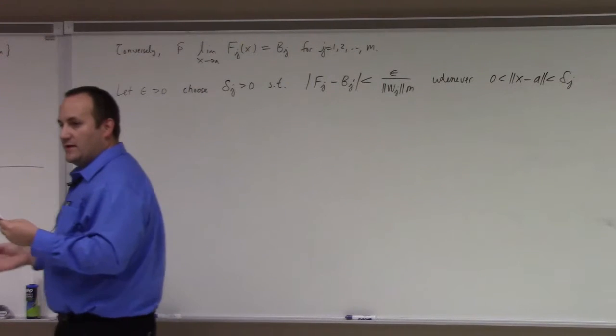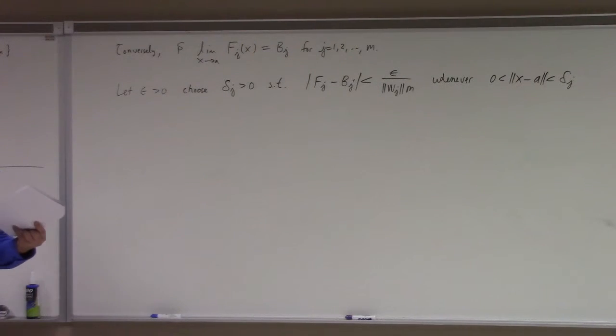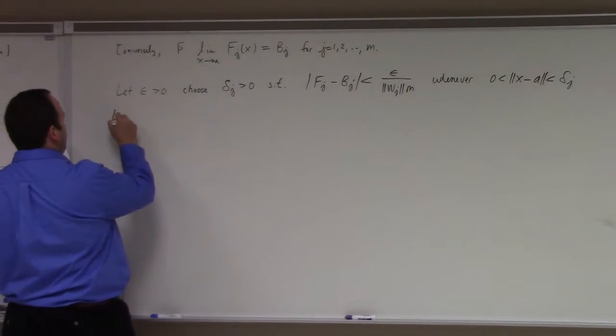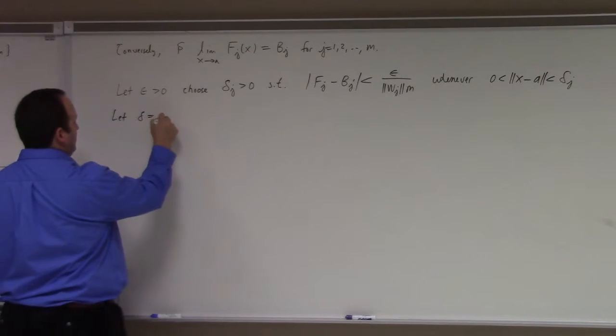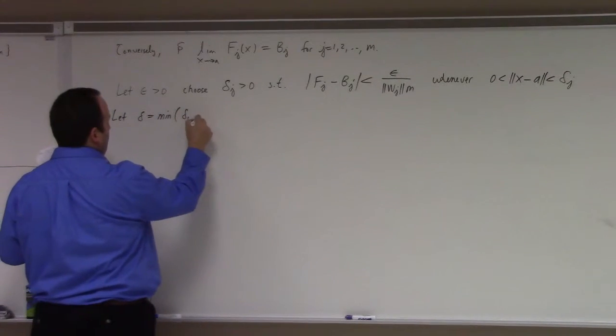That 0 is less than norm of x minus a is less than delta j. Okay? I can do that for each j, right? Now I'm greedy. I want these conditions to hold every single j. So what I do is I take delta to be the minimum of all of these. That way I get this condition for each j, for 1 through m. So I say, okay, so I'm going to let delta equal to the minimum of delta 1 through delta m.